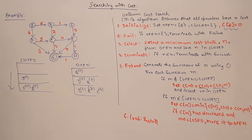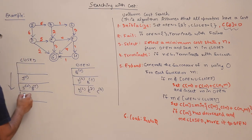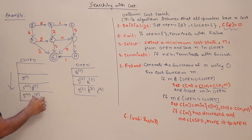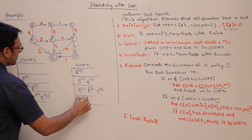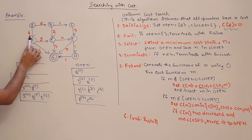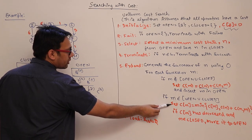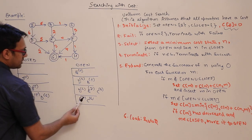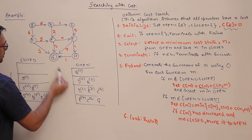We choose D for simplicity. We put D into closed — closed now contains S, B, and D. The successors of D are E and G. We put E and G into open alongside C. Going through D to E gives cost 6 + 5 = 11, but E already has cost 7, which is less, so we do not update E.